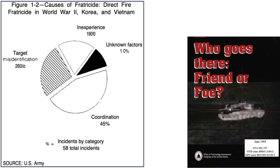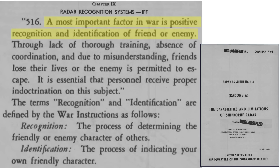This chart from a 1993 Office of Technology Assessment document outlines the causes of fratricide during World War II, the Korean War, and the Vietnam War. Misidentification of targets accounts for 26% of occurrences. A critical factor during a battle or war is the ability to distinguish between friend or foe, as discussed in this 1945 U.S. Fleet Radar Document.